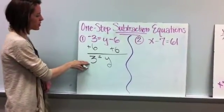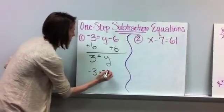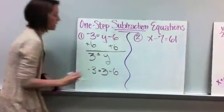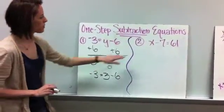And then you always want to go back and check your work, so we know that negative 3 is equal to negative, oops, excuse me, is equal to 3 minus 6. If you take 6 away from 3, you end up with negative 3. So we know that that works.